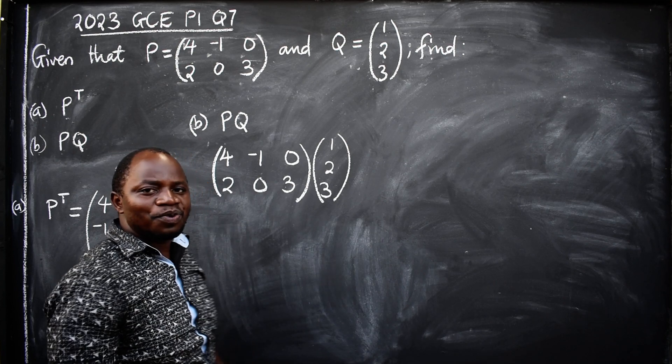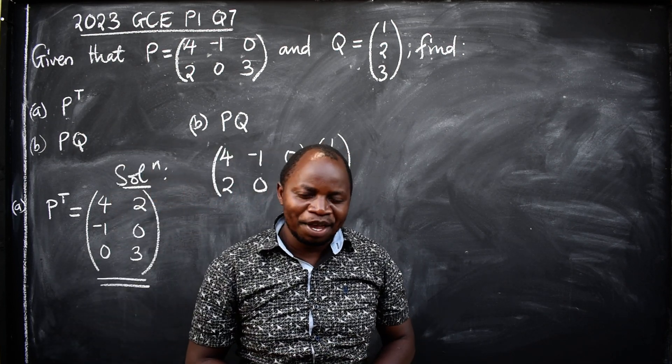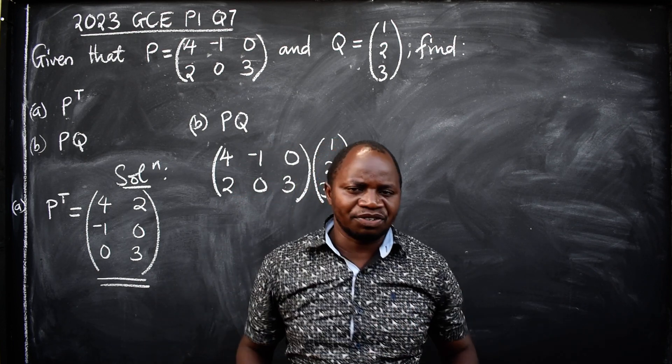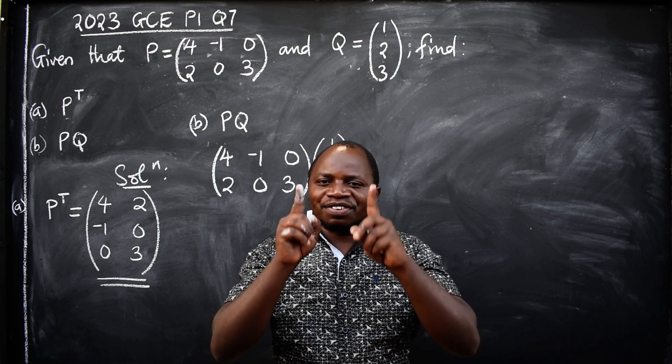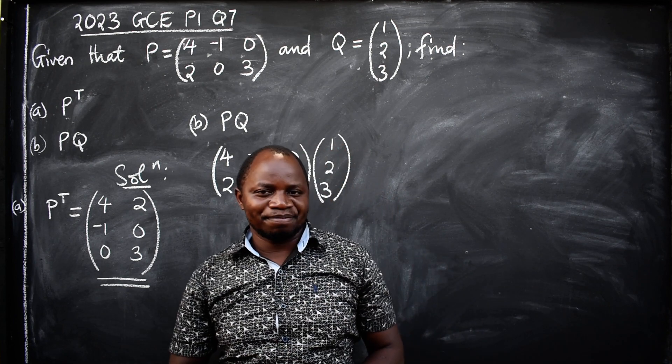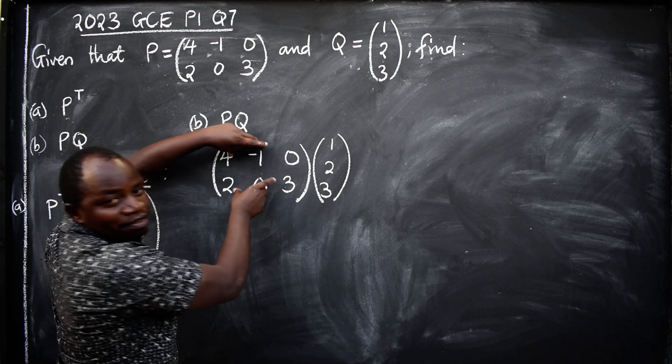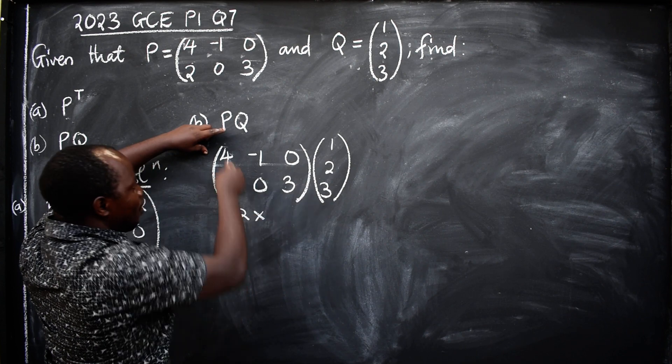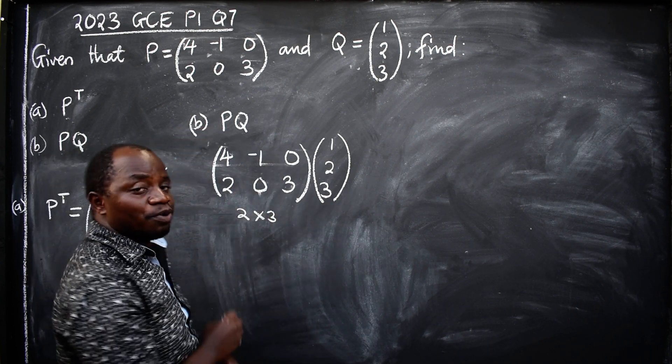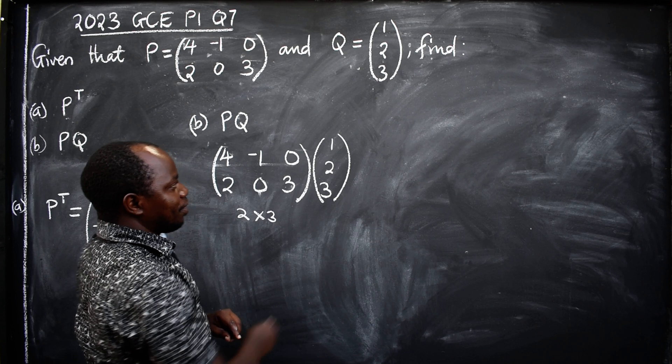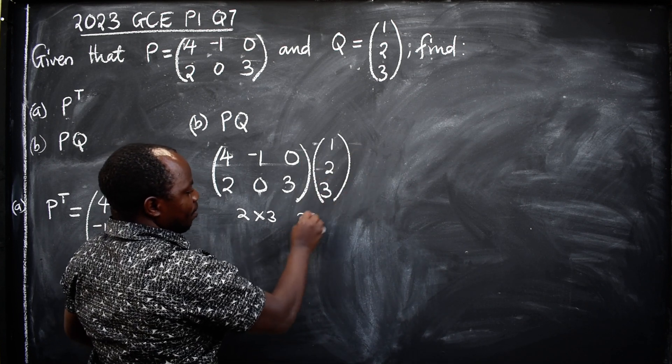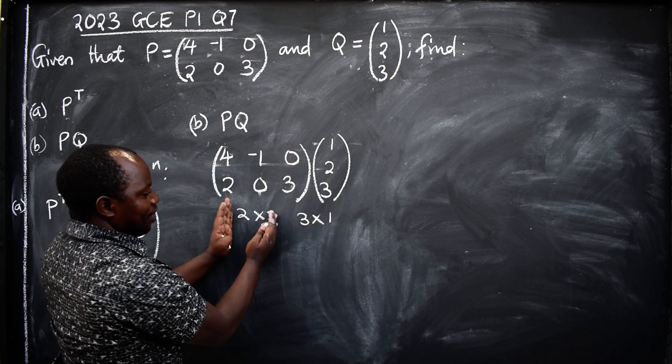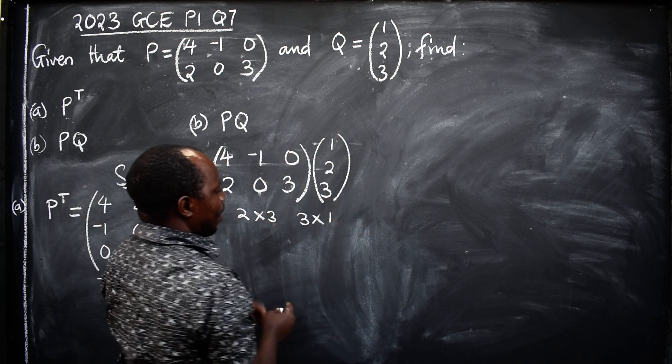This is what we want to multiply. But how do we go about it? Whenever you are asked to multiply matrices, the first thing, write their orders first. What is the order of this matrix? One, two, so this is a 2 by 3. What about this? One, two, three, so 3 by 1.